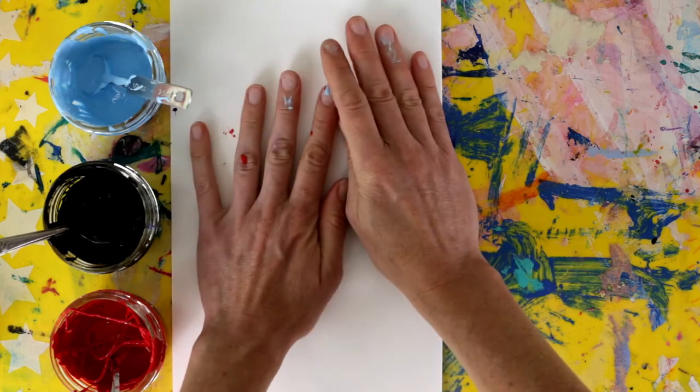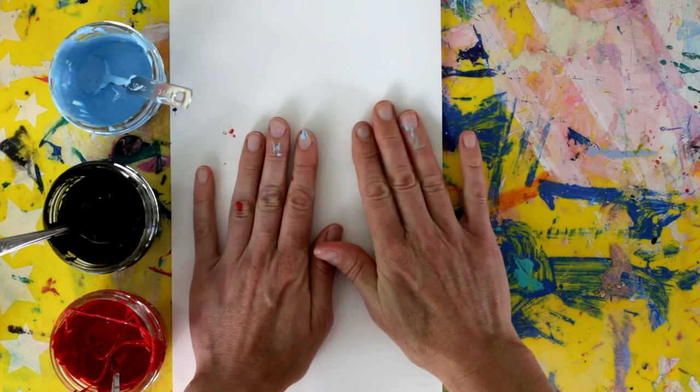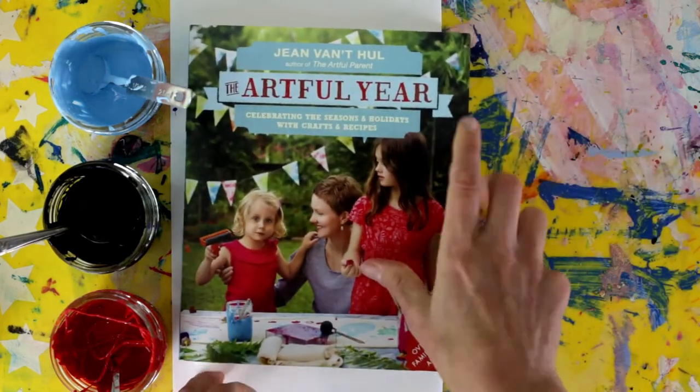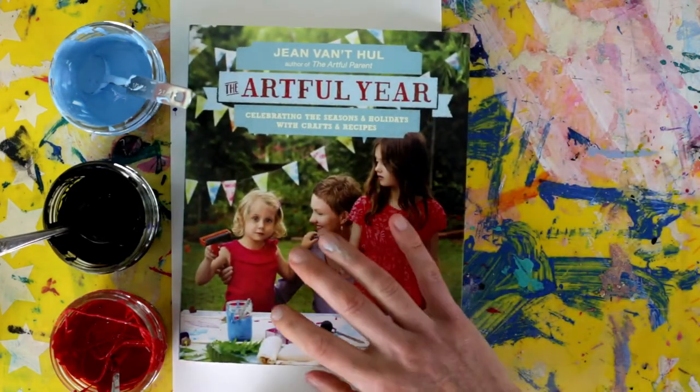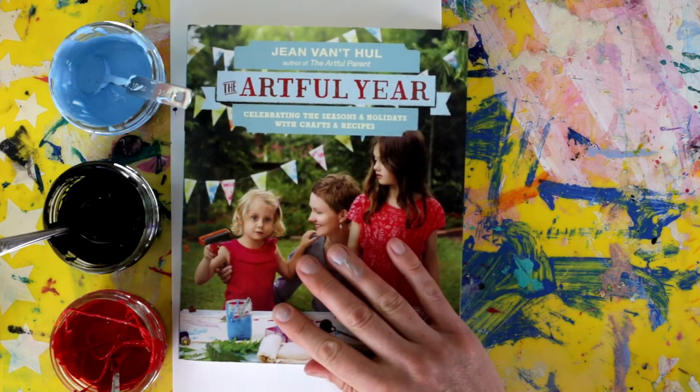Then you can either hold it down with your hands while you pull the string out, or you can set a book on top. I'm going to demonstrate with a book. I have mine right here, so I'm going to set it right there. And then pull the string out slowly and gently.